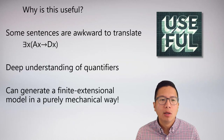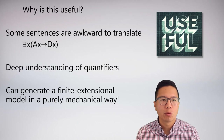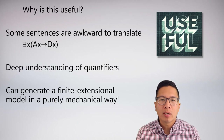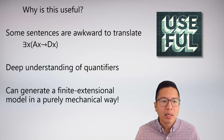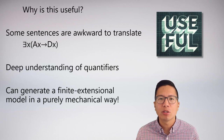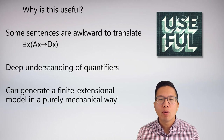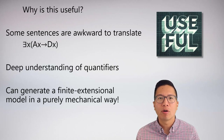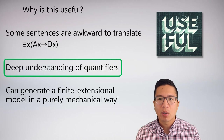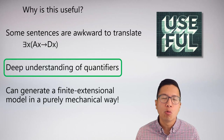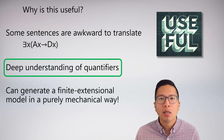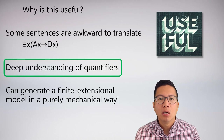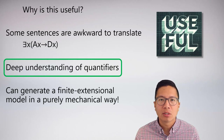Truth-functional expansion is particularly useful in multi-place predicate logic because we can generate a finite extensional model in a purely mechanical way. We've also been discussing how it gives a deeper understanding of quantifiers — a universal just means 'and,' and an existential just means 'or.' Now I'll look at one final example that will help clarify how quantifier order relates to meaning.